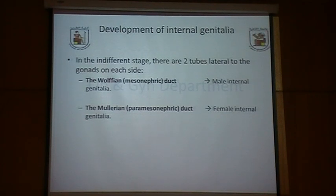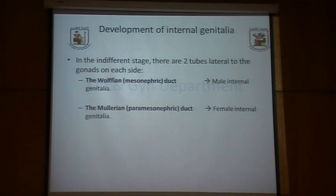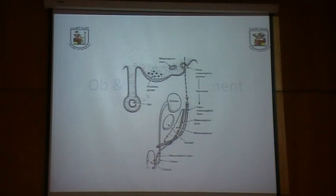Regarding development of the internal genitalia, in the indifferent stage there are two tubes lateral to the gonads on either side: the Wolffian or mesonephric duct, responsible for development of the male internal genitalia, and the Müllerian or paramesonephric duct, responsible for the female internal genitalia. You can see in the schematic diagram the kidneys, the gonad, and the mesonephric and paramesonephric ducts.